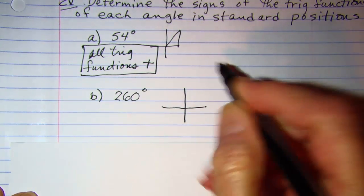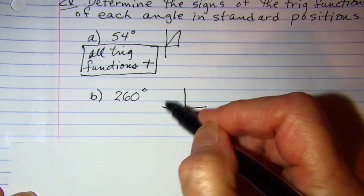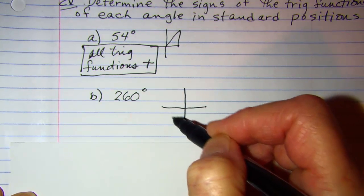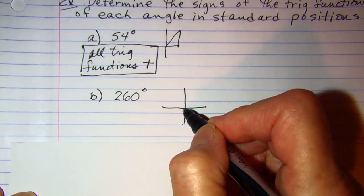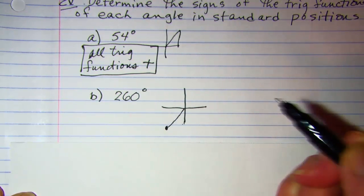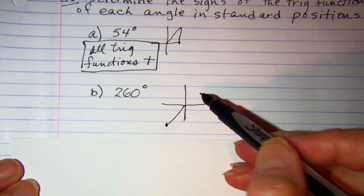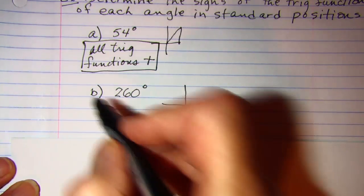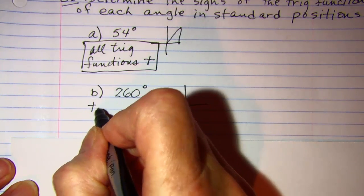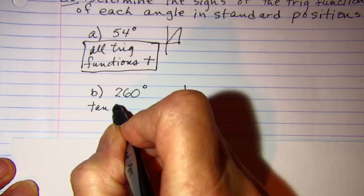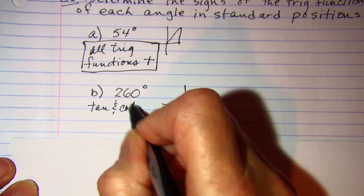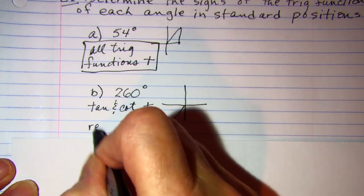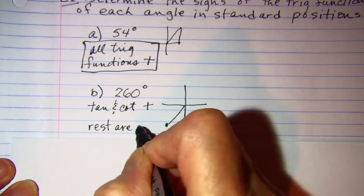260° is less than 270° but greater than 180°, so 260° will be in quadrant three. Tangent is positive in quadrant one and quadrant three. Tangent and cotangent, its reciprocal, are positive. The rest are negative.